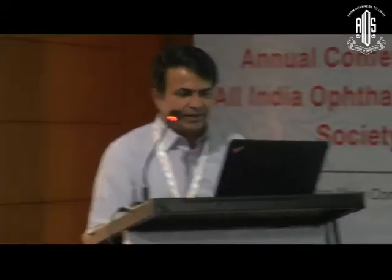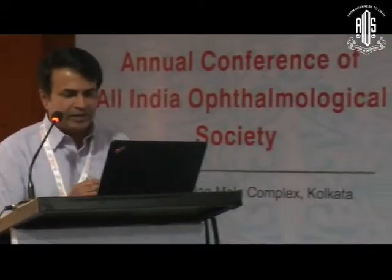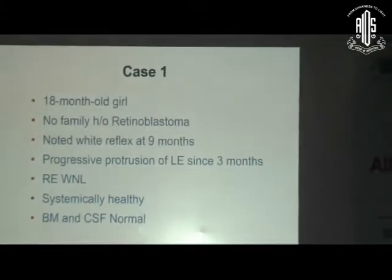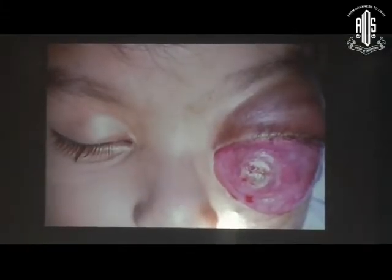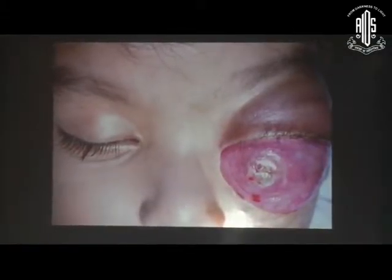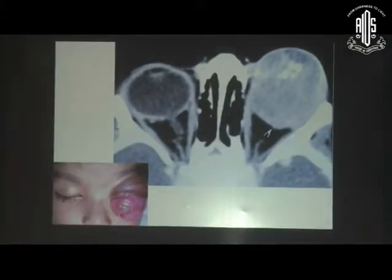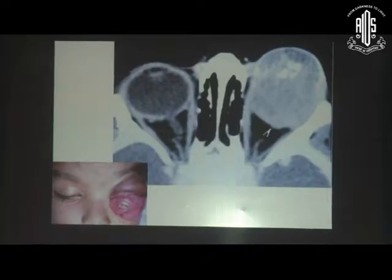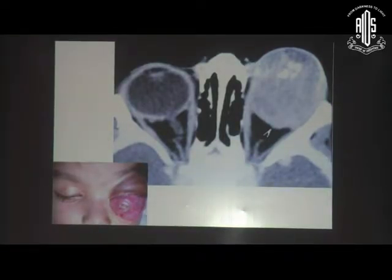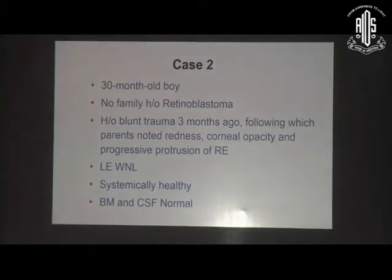I'll quickly show a few cases and then discuss how we deal with orbital retinoblastoma. The first is an 18-month-old girl with unilateral orbital retinoblastoma with extension to mid-orbit, with no optic nerve invasion and no systemic metastasis at presentation.